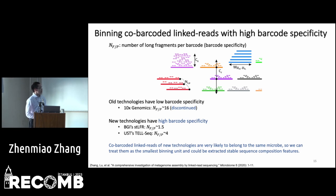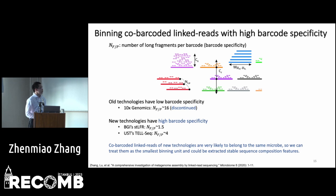Old linked-read technologies like 10x Genomics have low barcode specificity — each barcode corresponds to approximately 16 non-fragments. New linked-read technologies have high barcode specificity; for example, BGI's single-tube long fragment read sequencing has each barcode shared among nearly 1.5 non-fragments, and MGI's stLFR has each barcode shared among on average 4 non-fragments. So reads with the same barcode from new technologies are very likely to belong to the same microbe, and we can treat co-barcoded reads as the smallest binning unit. Their combined sequence can span several kilobases, making stable sequence features extractable.